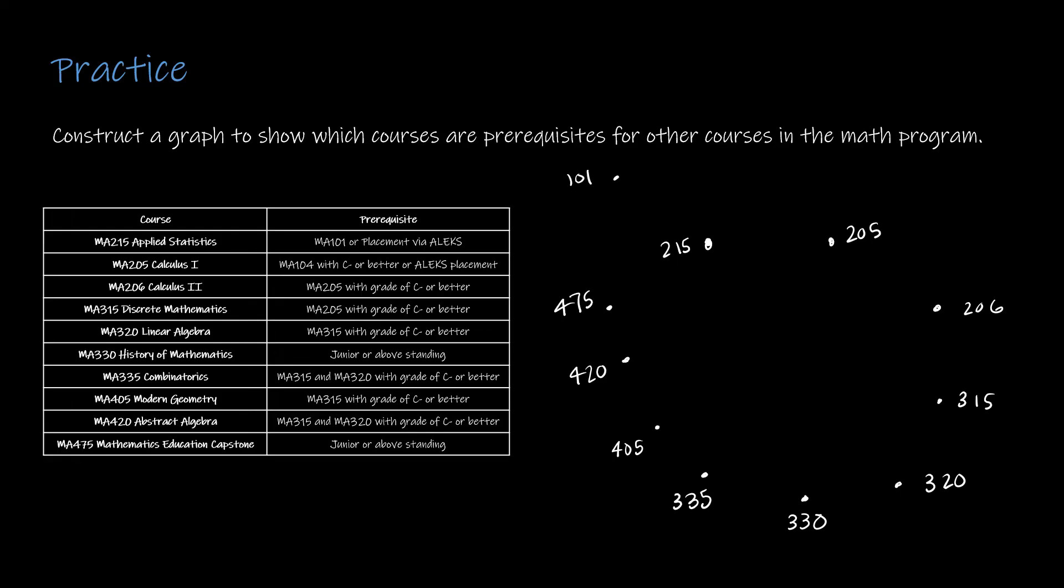Let's start at the top. MA 215 has a prerequisite of MA 101. MA 101 is not in my program but is a prerequisite, so I would have a directed edge. MA 205 needs MA 104, which is trig, so don't take calculus without trig please. For MA 206, I need 205. For 315, I need 205.